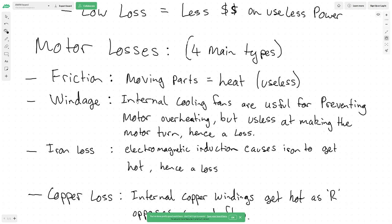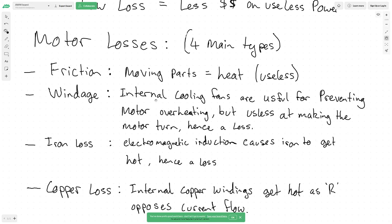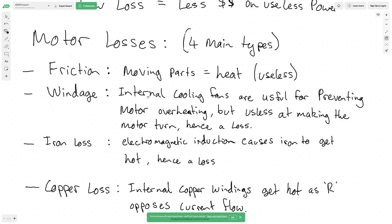The second is windage: most medium to large motors have internal cooling fans. These fans are useful for preventing motor overheating, so they do have a purpose in that regard. However, they are useless at making the motor turn — hence it's counted as a loss. It doesn't help the actual task, which is to make the motor turn as fast and efficiently as possible.